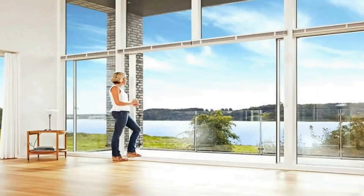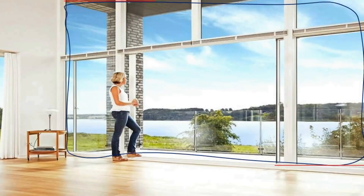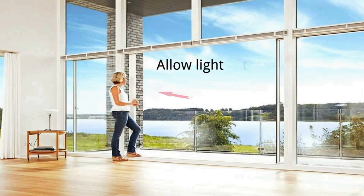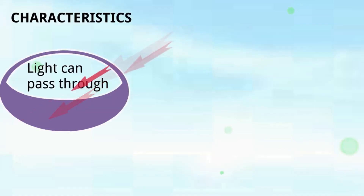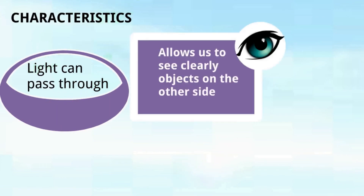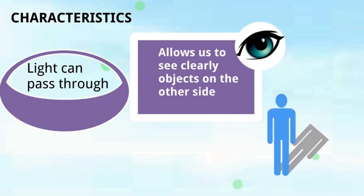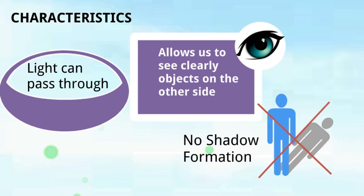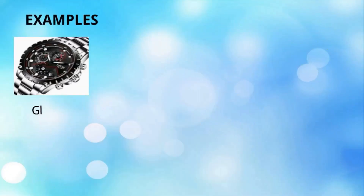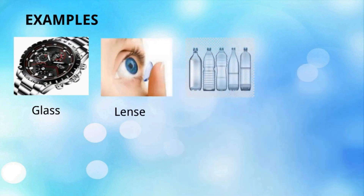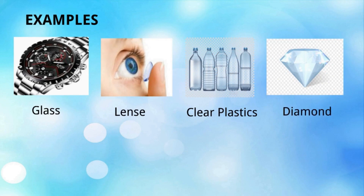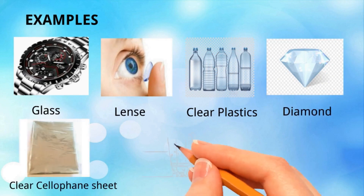For a detailed understanding of transparent objects: someone is watching outside through glass and is able to see everything clearly because light is coming from outside to our eyes. Characteristics: light can pass through completely, allows us to clearly see objects on the other side. No shadow is formed because light is not obstructed. Examples: glass, lens, clear plastics, diamond, clear cellophane, and clear water.